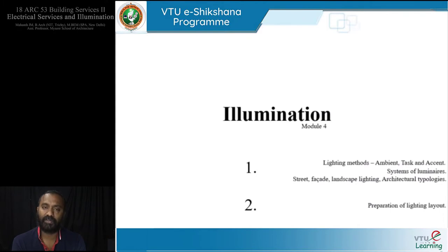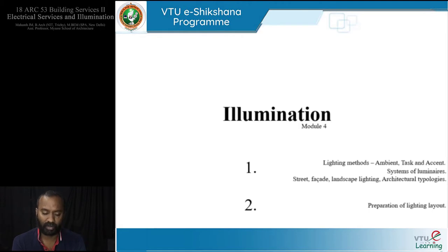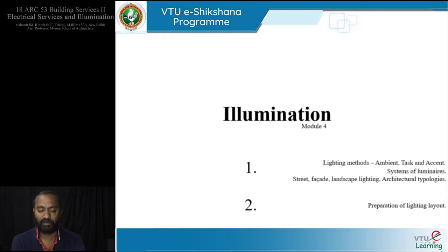With that as the first segment of the module, the next sub-heading talks about lighting methods — the different types of lighting methods. This module is divided into two segments: the first covers ambient, task, and accent lighting, luminaires, and typologies such as street, facade, and landscape lighting, using PPT slides and images. The second segment moves on to preparation of a lighting layout and will be board-based.